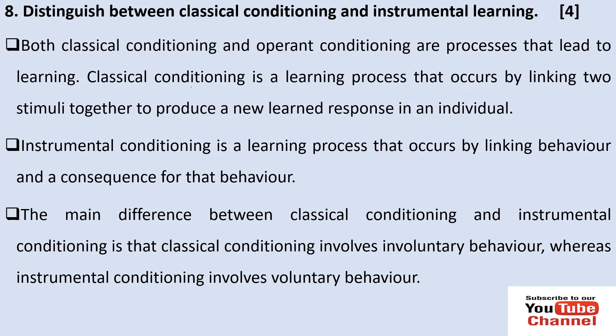Number eight: distinguish between classical conditioning and instrumental learning. Both are processes that lead to learning. Classical conditioning is a learning process that occurs by linking two stimuli together to produce a new learned response in an individual. Instrumental conditioning is a learning process that occurs by linking behaviour and the consequence of that behaviour. The main difference is that classical conditioning involves involuntary behaviour, whereas instrumental conditioning involves voluntary behaviours.